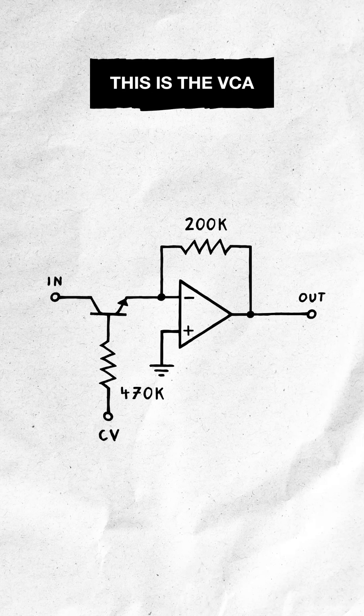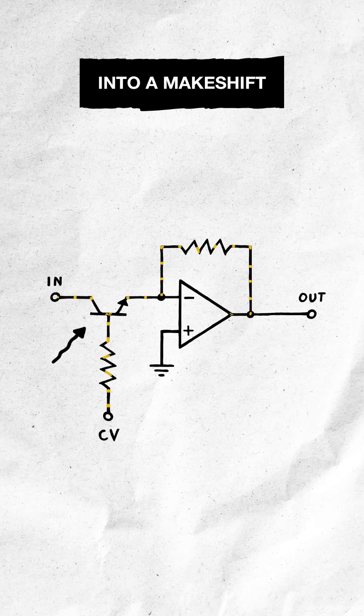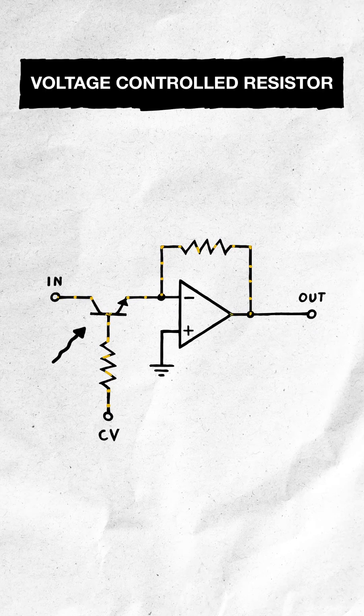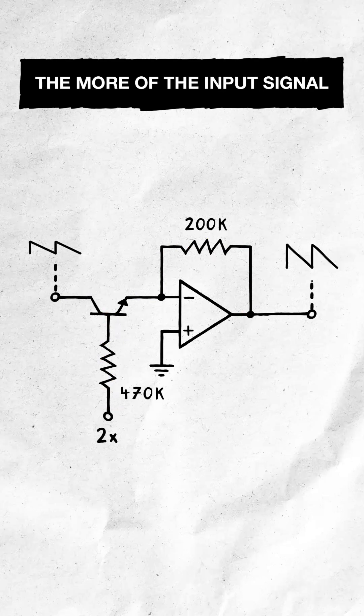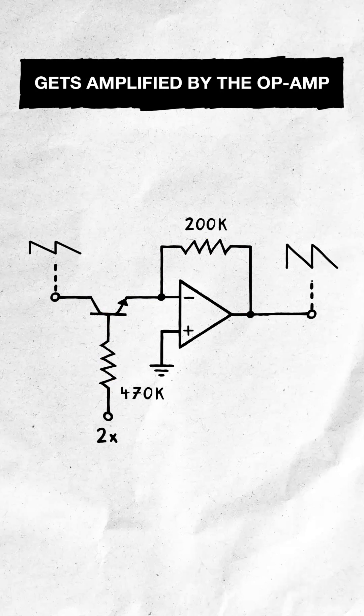This is the VCA. It works by turning a regular NPN transistor into a makeshift voltage-controlled resistor. The higher the base voltage, the more of the input signal gets amplified by the op-amp.